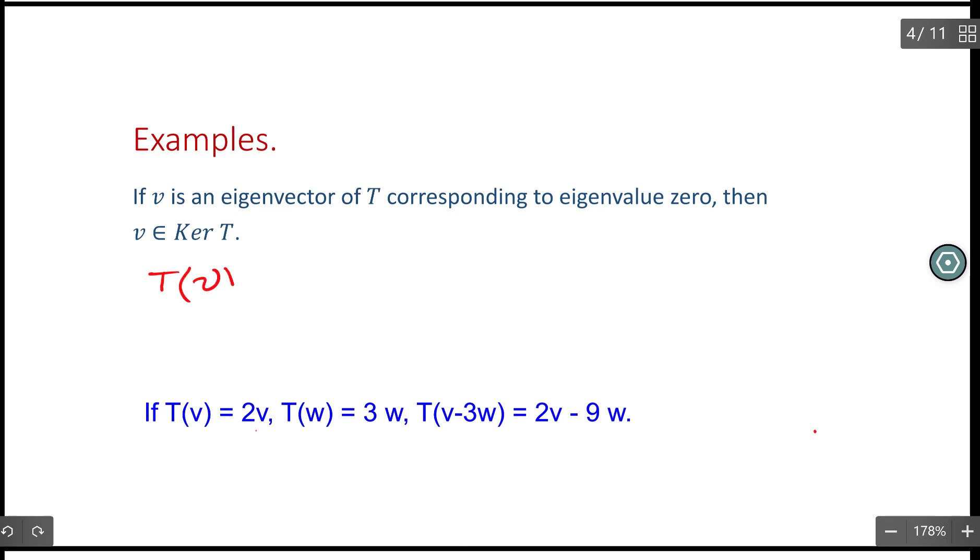T(v) equals λv, but this λ is assumed to be zero. So what does it mean? The number zero multiplied to any vector gives the zero vector. This is one of the properties of any vector space. So this implies T(v) equals zero. That's the definition of the kernel. Kernel of the map is all those which are mapped to zero.